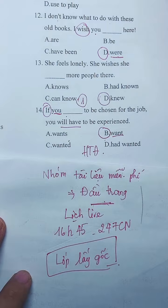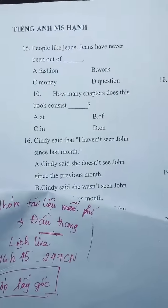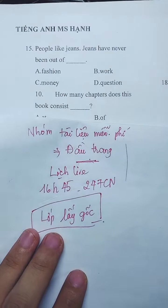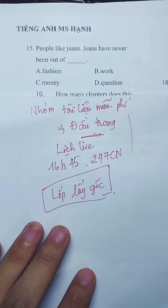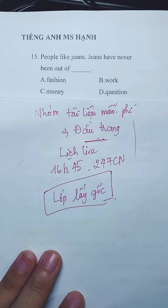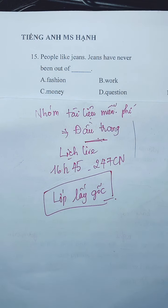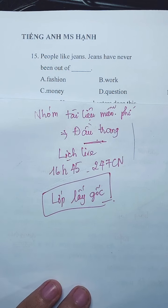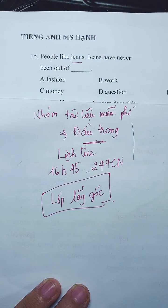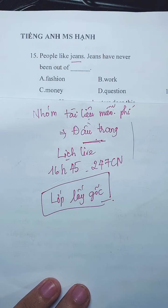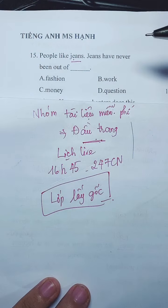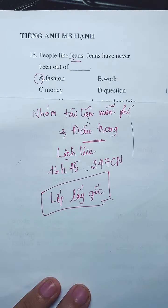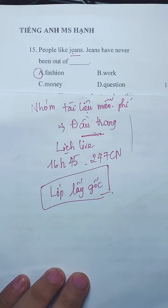Câu 15 có cụm từ 'out of'. Mọi người thích quần jeans - không bao giờ bị lỗi thời. Khi hiểu câu đầu thì chọn được đáp án: 'fashion' - nói về thời trang. Quần jeans không bao giờ bị lỗi thời.